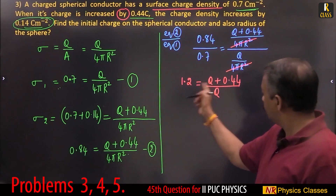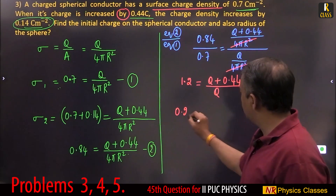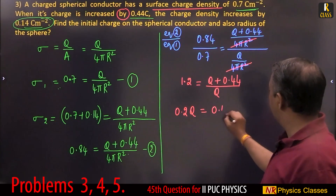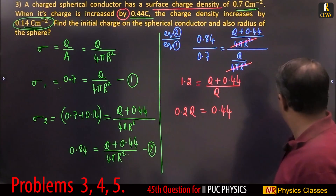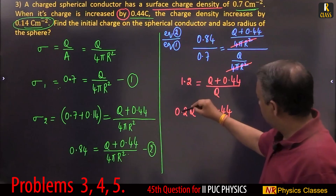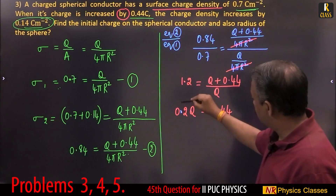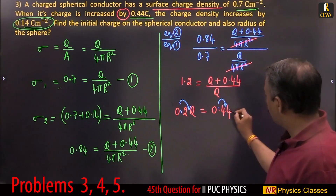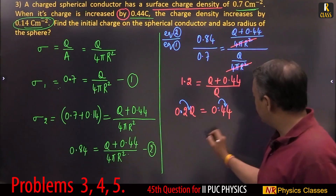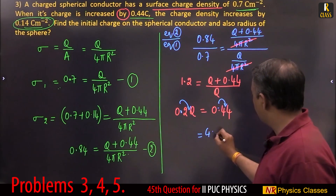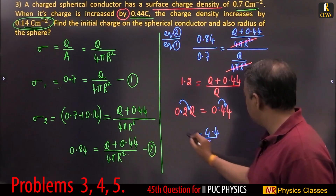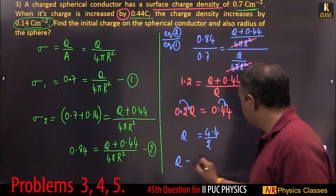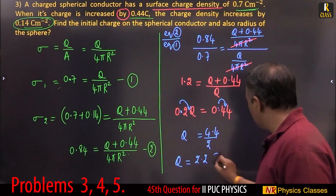Taking this to the side: 1.2Q minus Q gives 0.2Q equals 0.44. Bringing the decimal across: 4.4 divided by 2 gives Q equal to 2.2 coulomb.